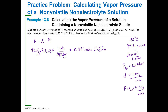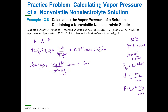To get moles of water, we have a volume and a density. We take 300 milliliters of water times the density of 1 gram per milliliter, which gives us grams of water. Then, since one mole of water is 18 grams, that gives us 16.7 moles of water.